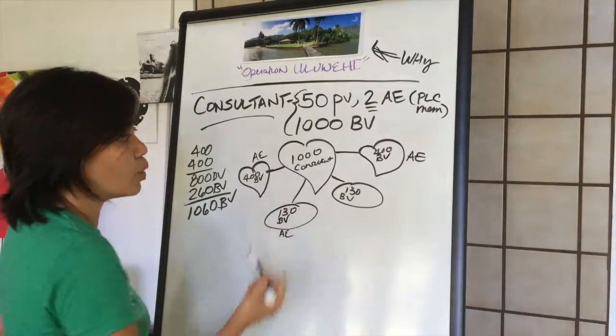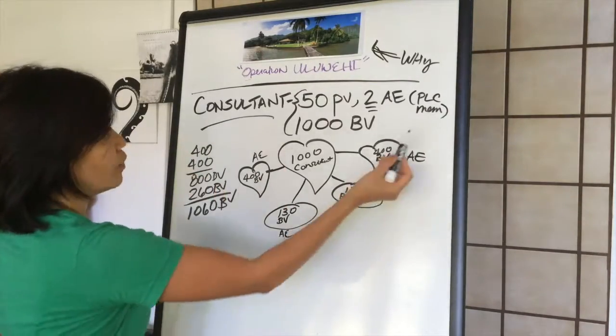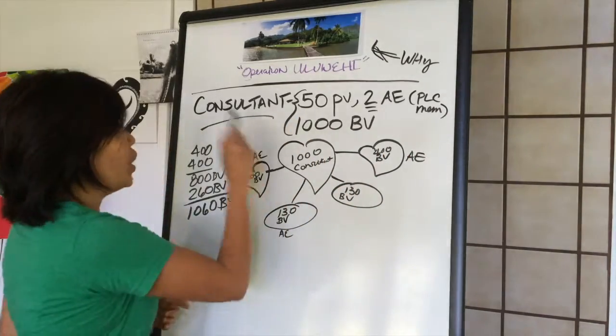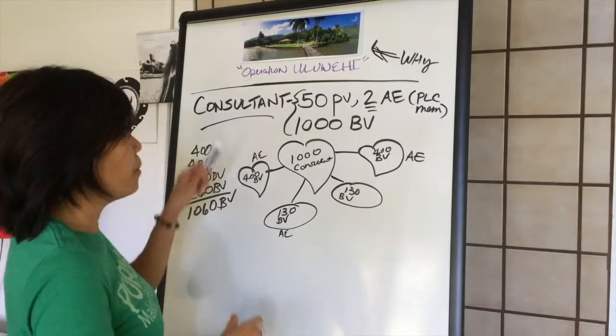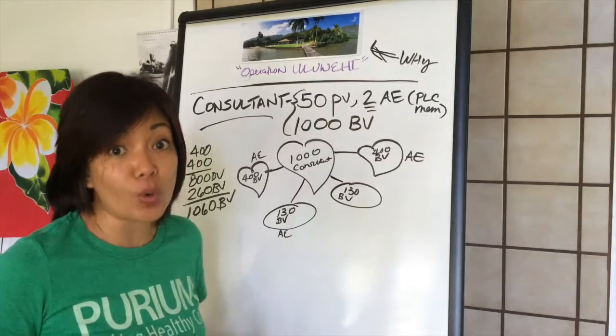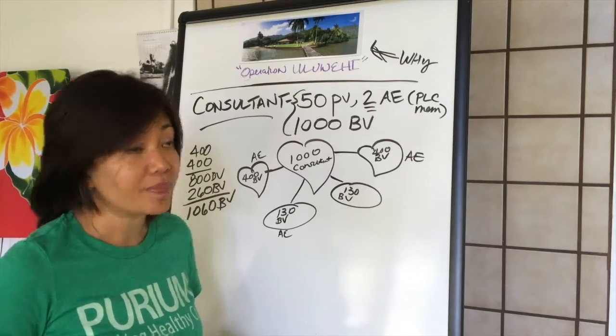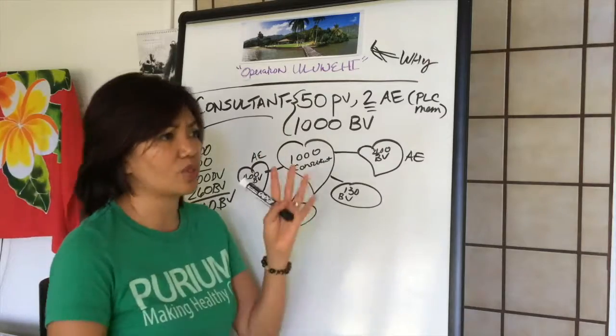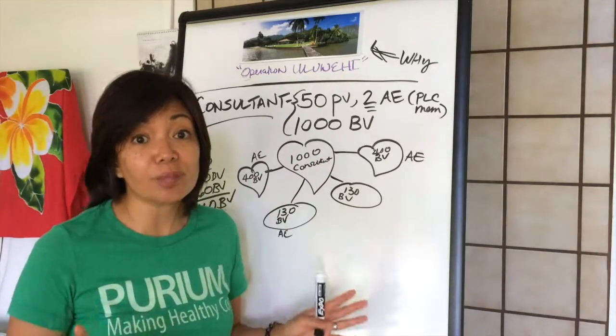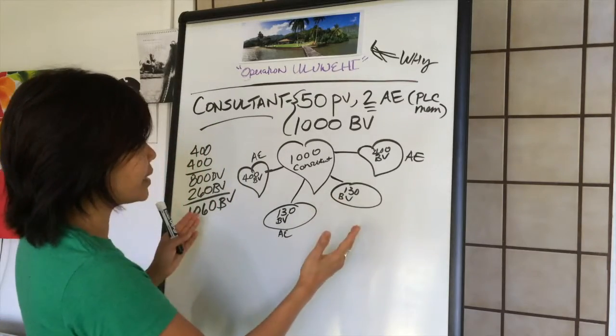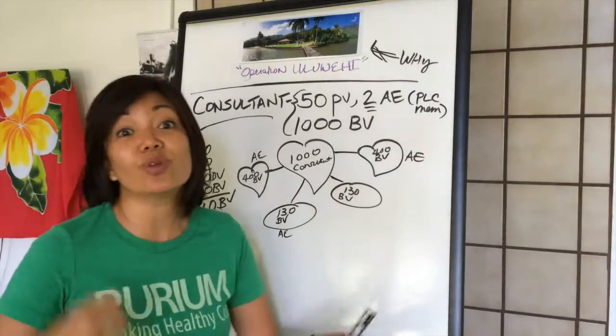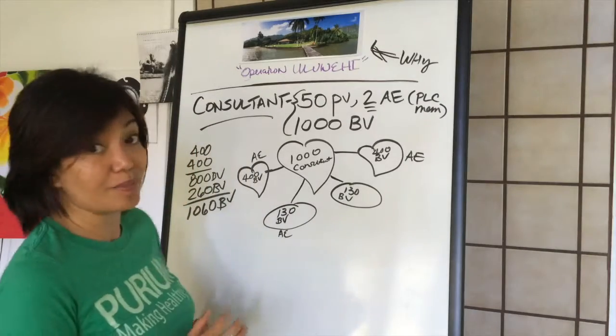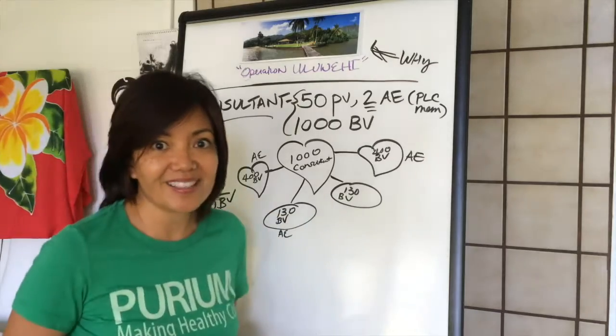You've got your two active enrollees hooked up to you already. And of course you've got your 50 personal volume order already in. Boom! You hit consultant. And boom! You get a $50 bonus. A $50 bonus. Now I am not going to break down any kind of what the professional bonus is or the uni levels or compression and all that kind of stuff. I want to keep things very very simple. But this is basically how you become a consultant.